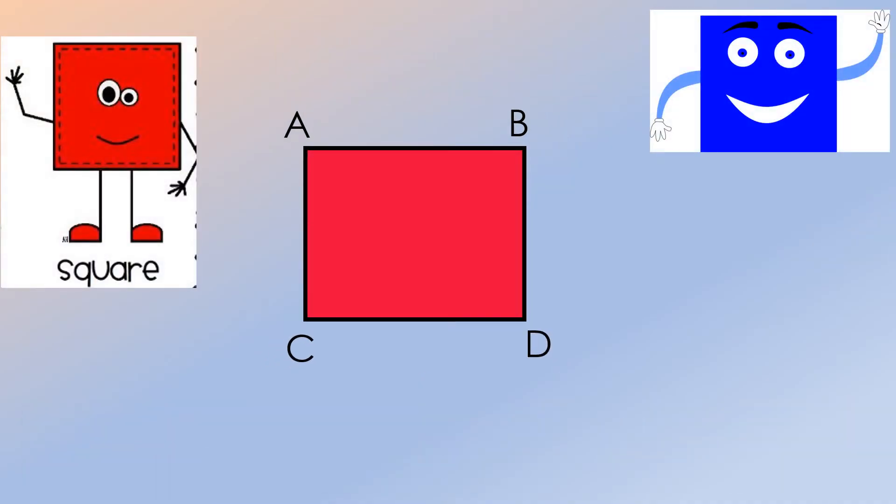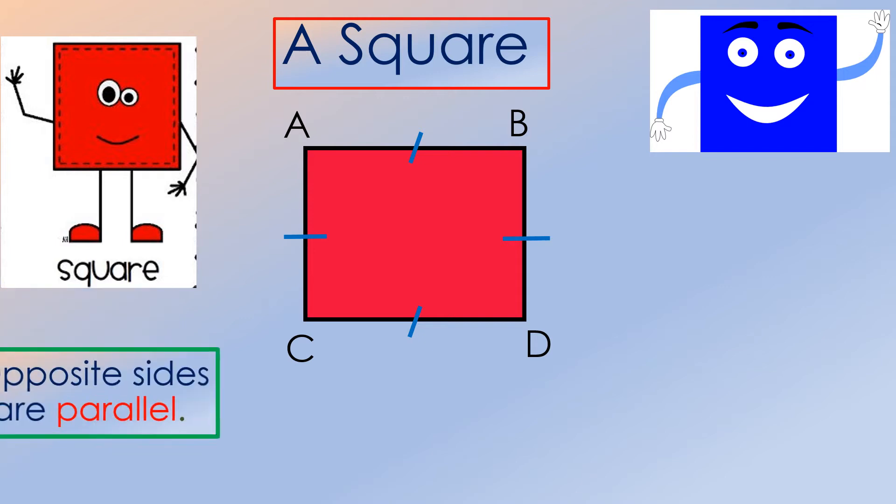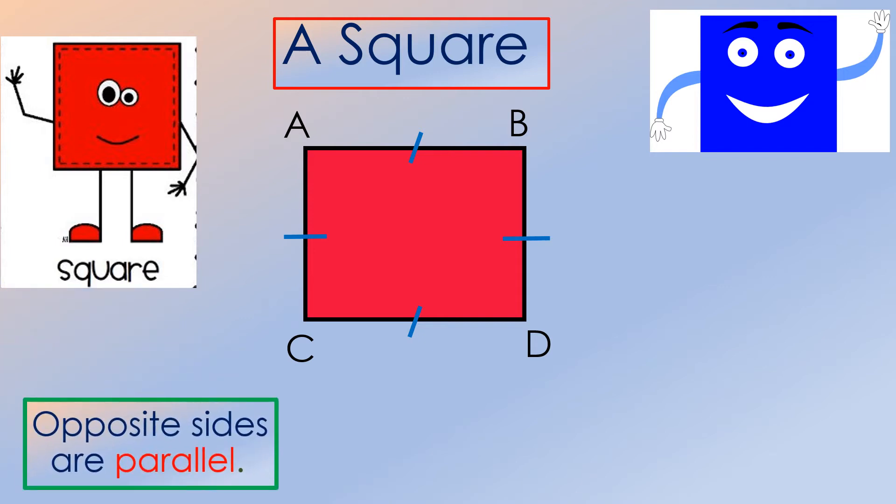One of the very common types of quadrilateral that you can see almost everywhere is the square. Just like a rhombus, a square has four equal sides. Opposite sides are parallel. As you can see in the given figure, side AB is parallel to side CD. Another pair, we have side AC that is parallel to side BD.